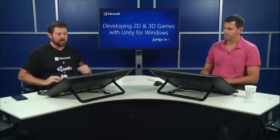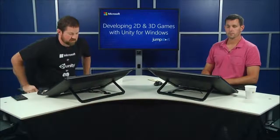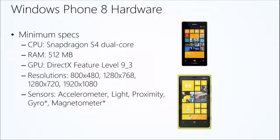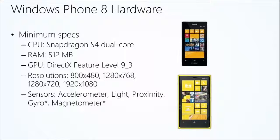Windows Phone 8 hardware — these are the minimum specs. All of our phones have Qualcomm processors; the minimum is the S4 dual core, a very capable processor. Minimum 512 megabytes of RAM on phone devices. If you have trouble getting your game running on one of these devices you can opt out of that. We have a session with Jaime later this week that will go way more in depth on this.